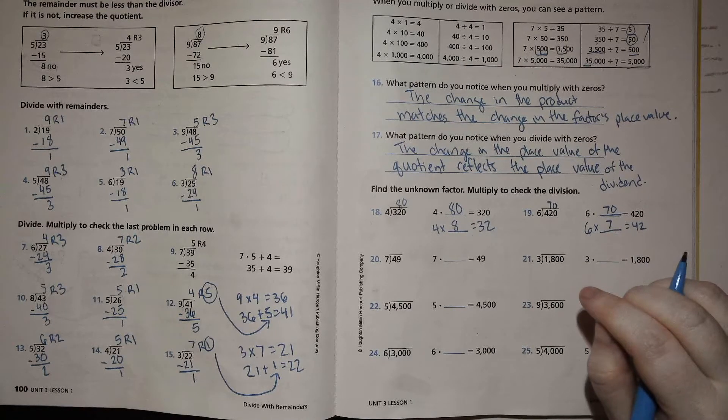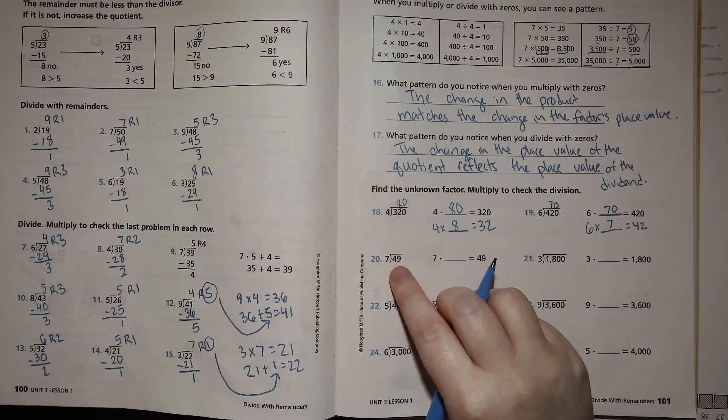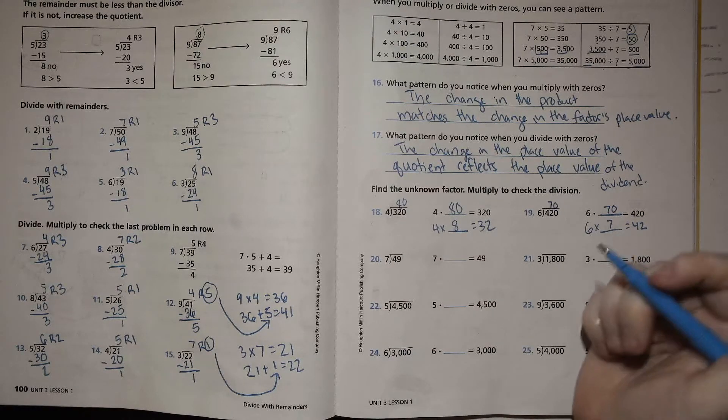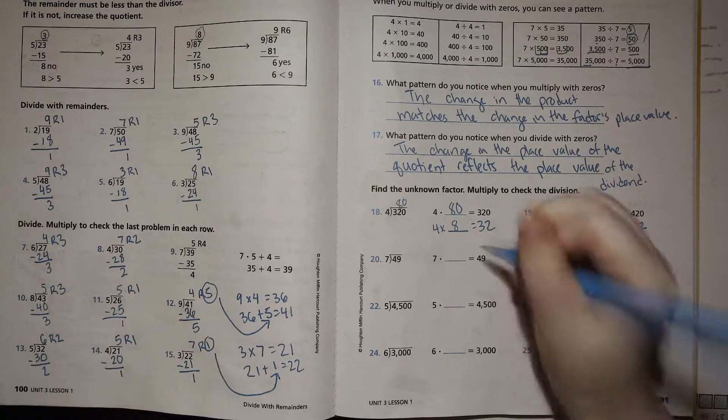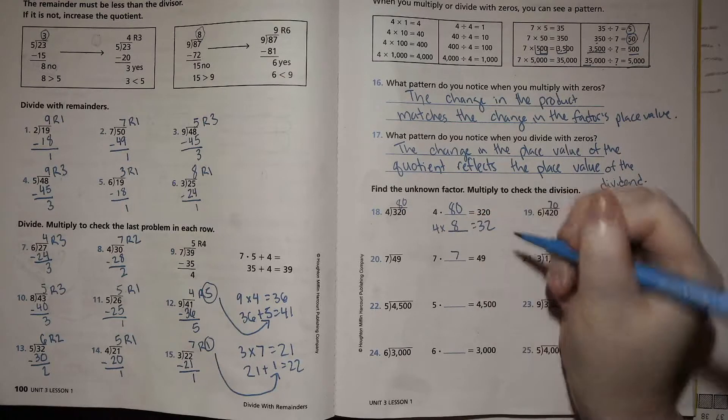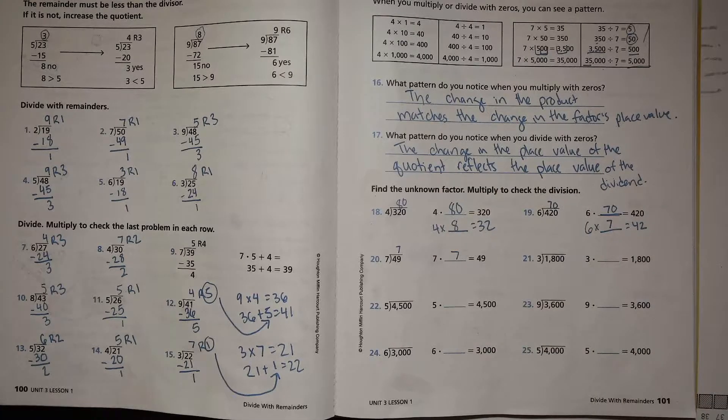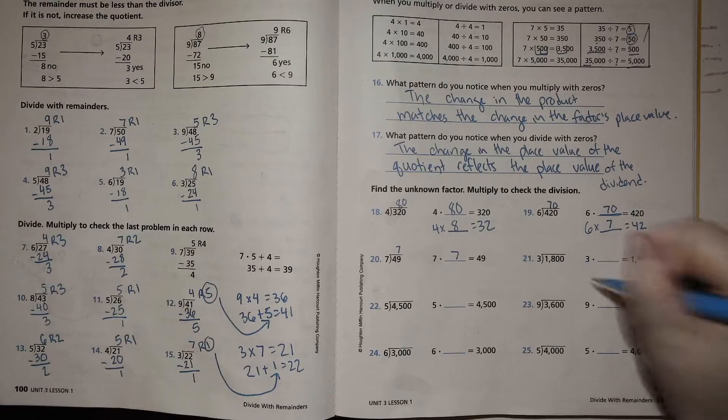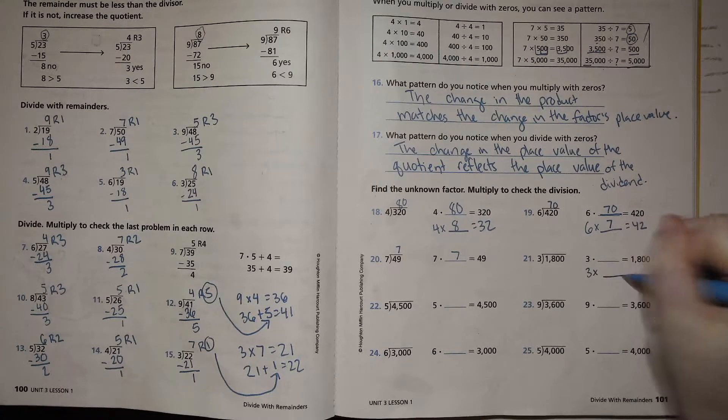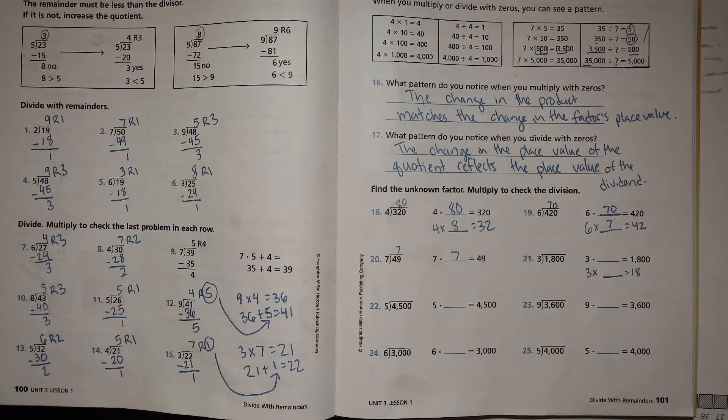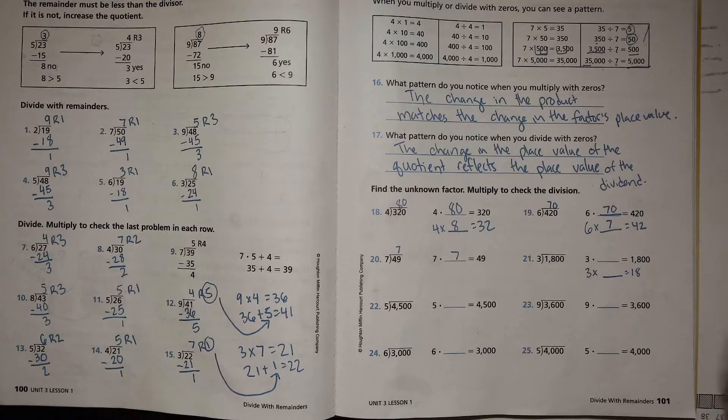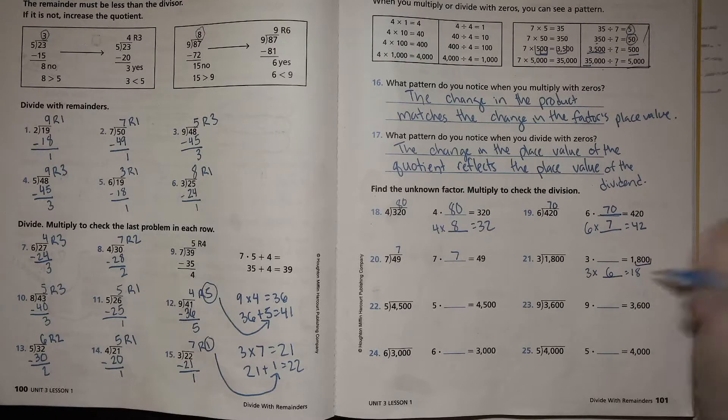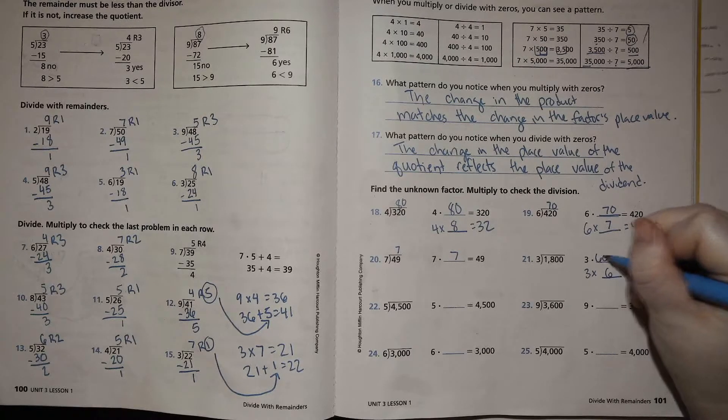7 goes into 49 how many times? Or 49 divided by 7 is what? Well, this one, if you've memorized your math facts, you know already. It's a single digit one. 7 times 7. So we'll just put our 7 up there. All right. 1800. 3 times what is 18? 3 times 6 is 18. So how do you get that 100? 600, right?